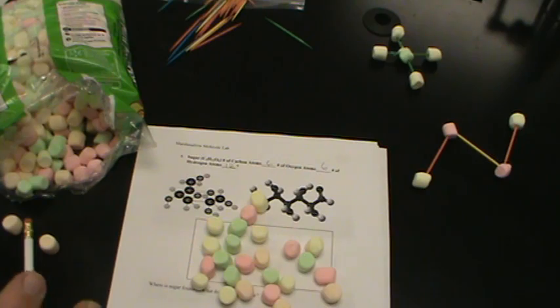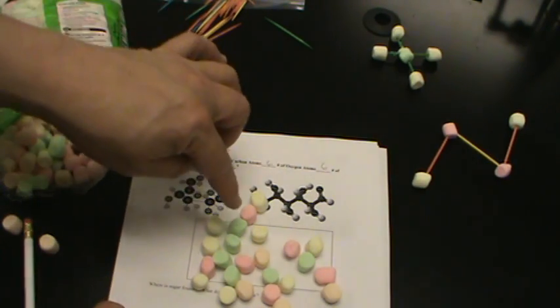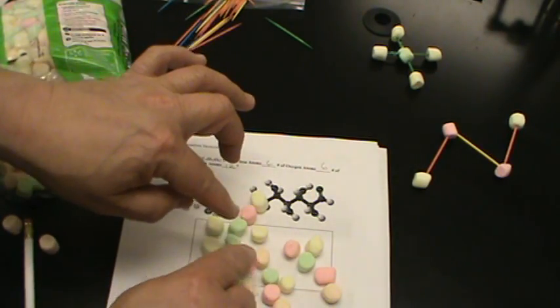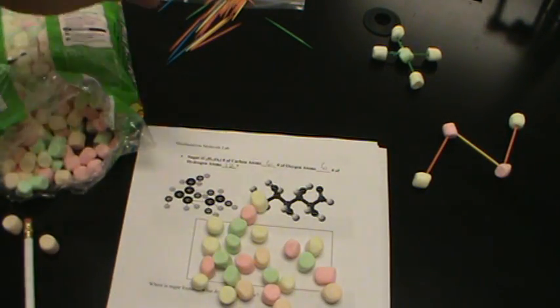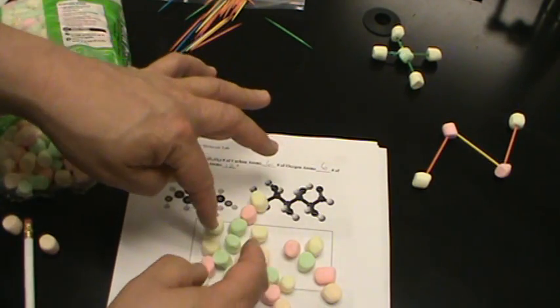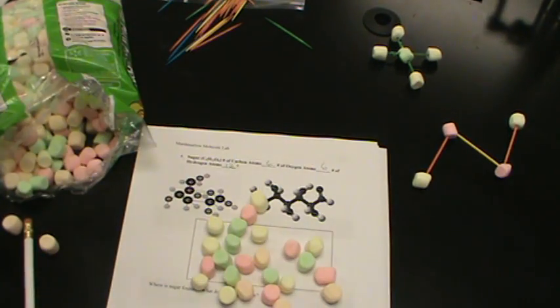So, if we count, we should have six greens. One, two, three, four, five, six. We should have six pinks. One, two, three, four, five, six. And we should end up with twelve hydrogens. One, two, three, four, five, six, seven, eight, nine, ten, eleven, twelve.